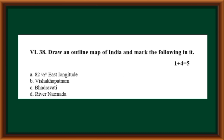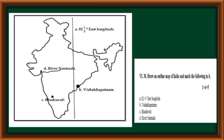Sixth main — Question 38: Draw an outline map of India and mark the following: (A) 82½° East Longitude, (B) Vishakhapatnam, (C) Bhadravati, (D) River Narmada.